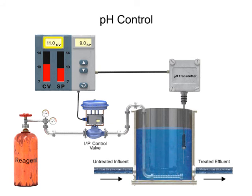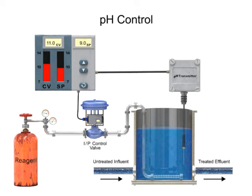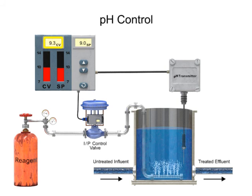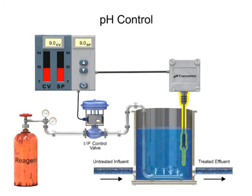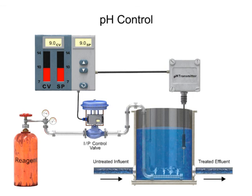With the pH level at 11 detected by the sensor, the controller commands the control valve to open and introduce more carbon dioxide. As the increased carbon dioxide mixes with the influent, the pH is lowered in a controlled manner. Reaching the set point, the carbon dioxide flow is minimized and the process is continually monitored for variation. The effluent is the treated water that is discharged out of the tank. The process continues to provide the lime-softened water at the desired pH level.